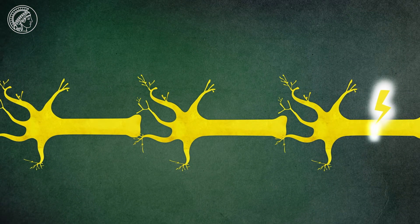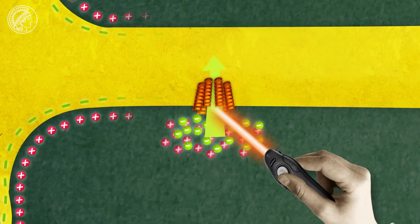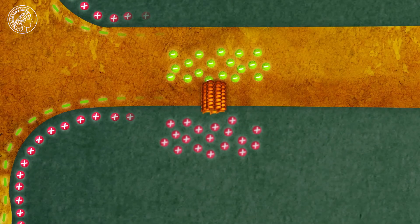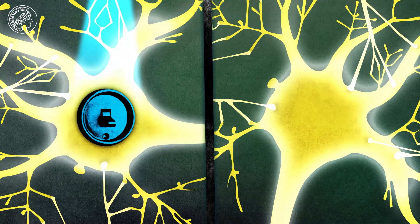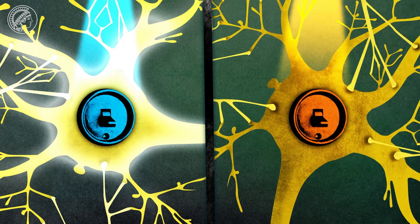But the opposite effect also occurs. Halorhodopsin, which comes from halobacteria, reacts to orange light and smuggles negative ions into the cell. This then deactivates the cell, switching cells on and off using light. A fascinating prospect.